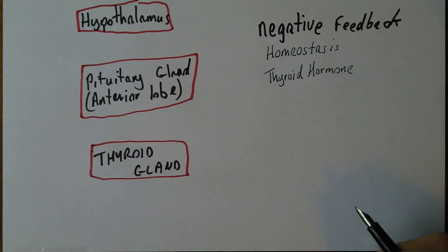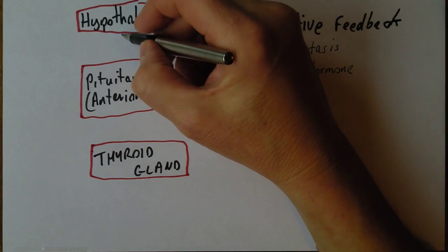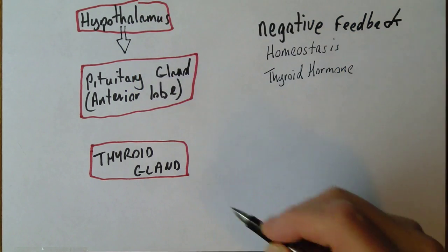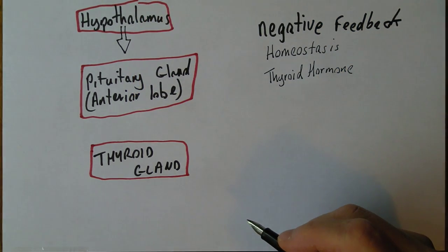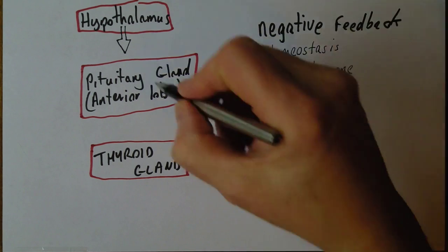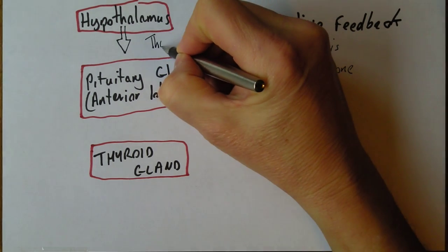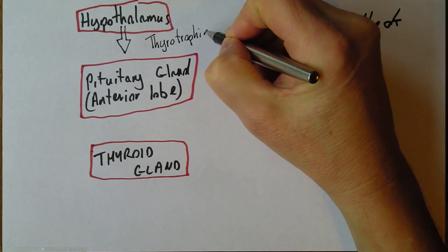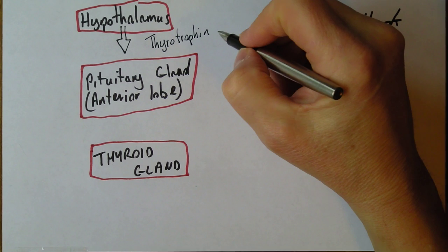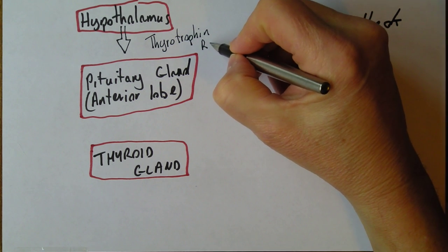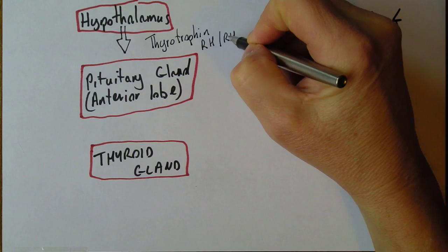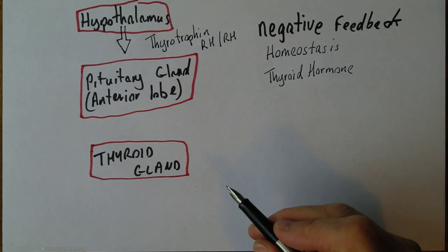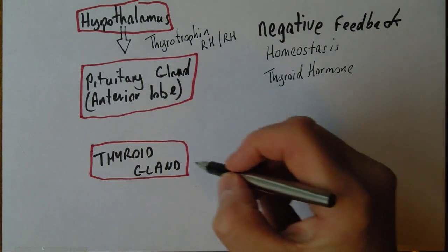When the levels of thyroid hormone are low, the hypothalamus will start things off and produce a releasing hormone called thyrotrophin releasing hormone, or thyrotrophin releasing factor.